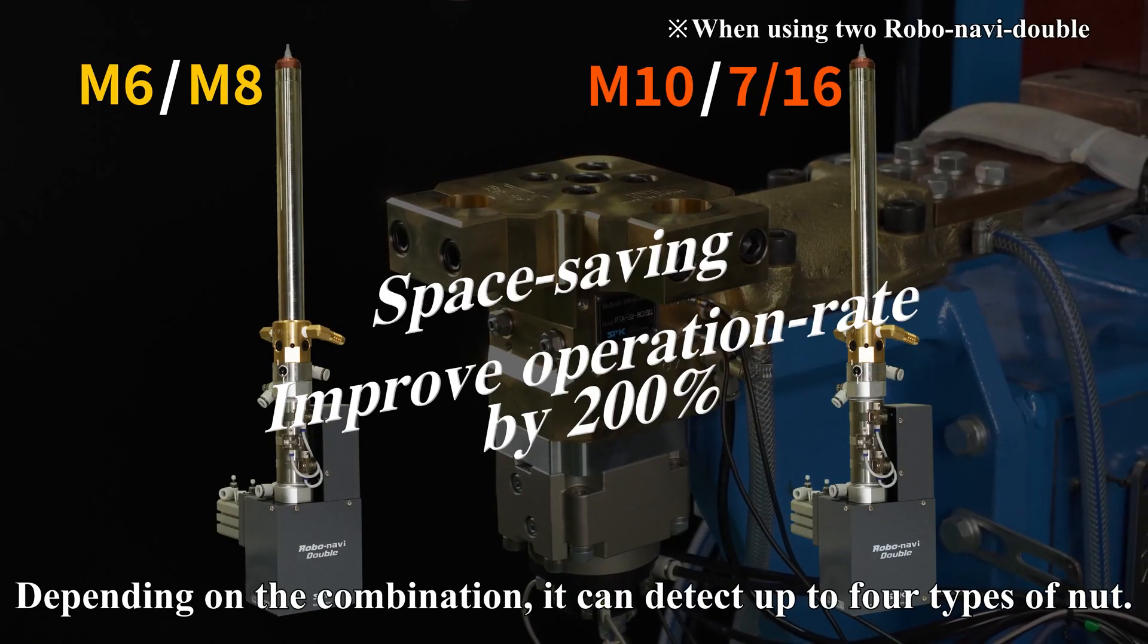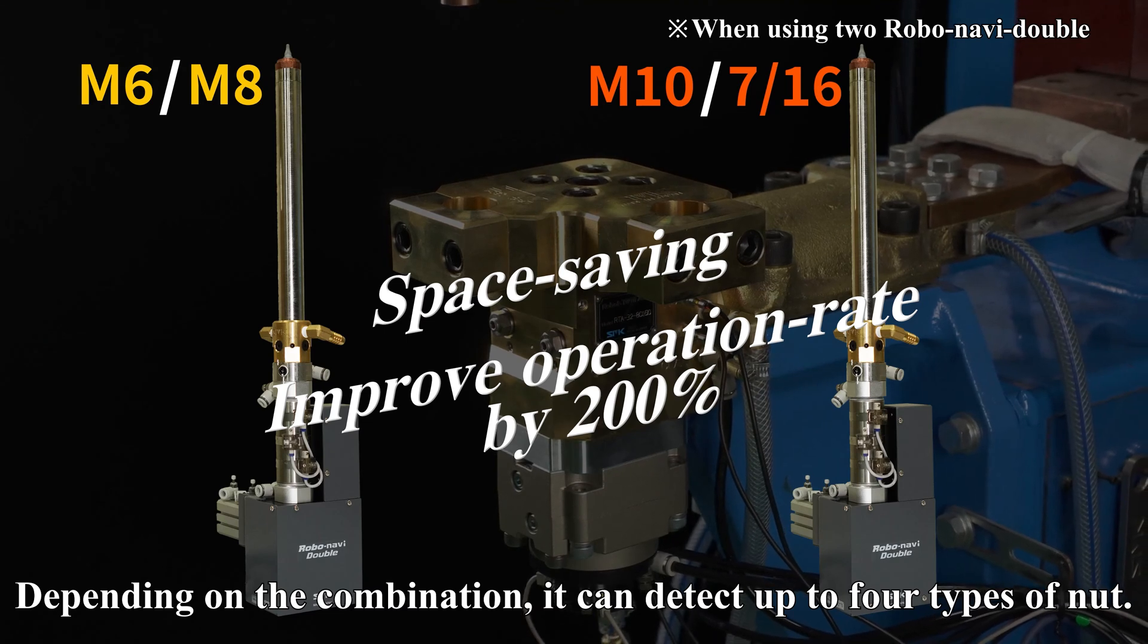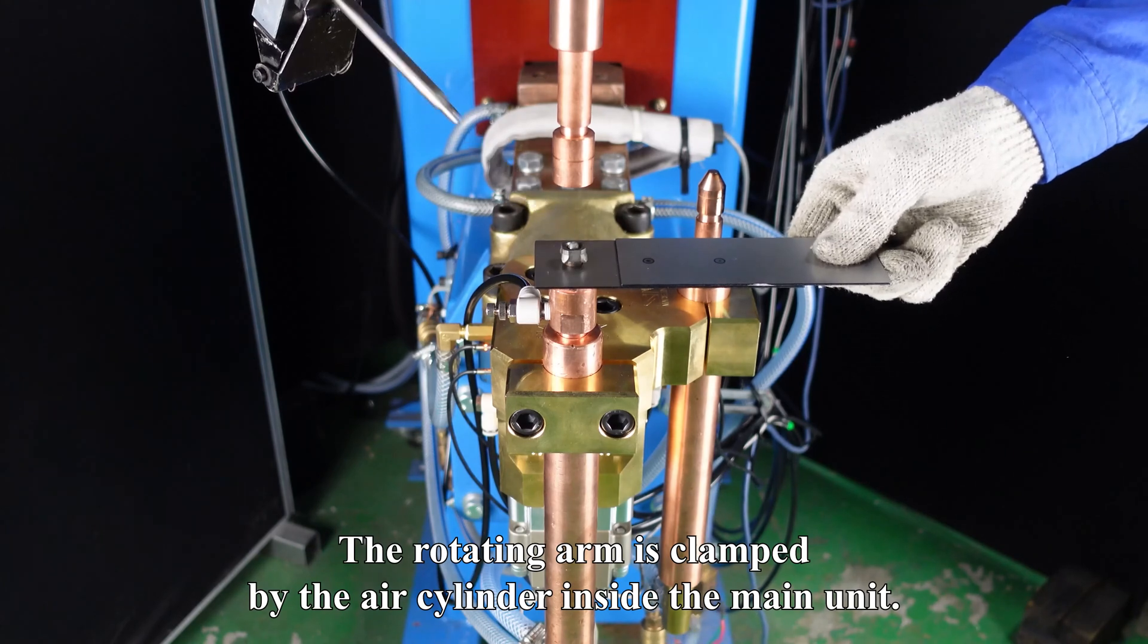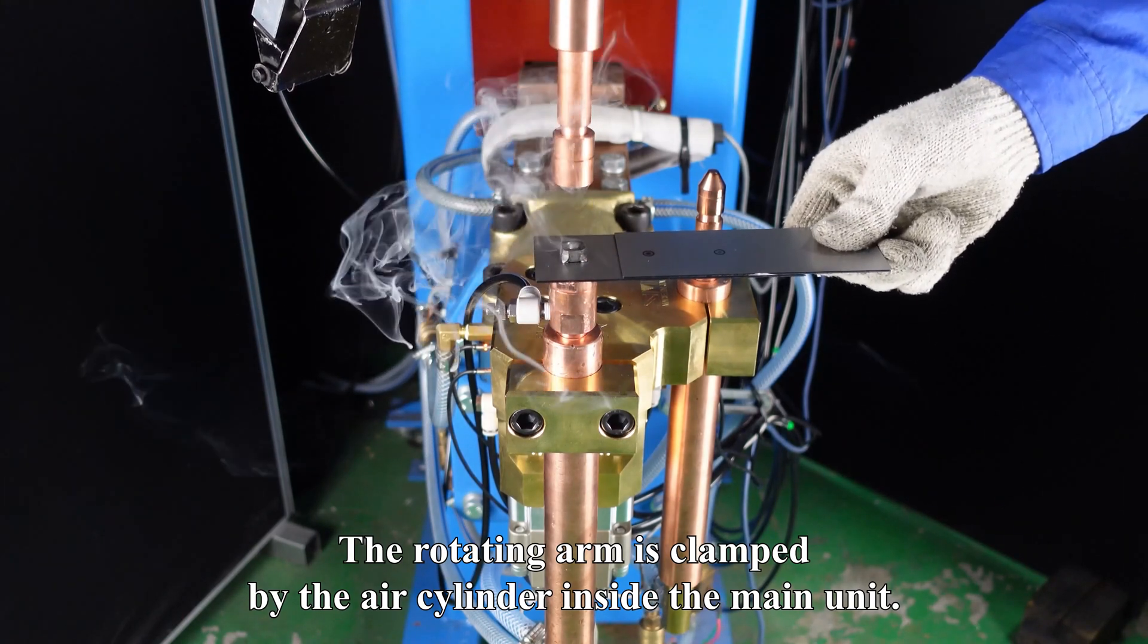Depending on the combination, it can detect up to four types of nut. The rotating arm is clamped by the air cylinder inside the main unit.